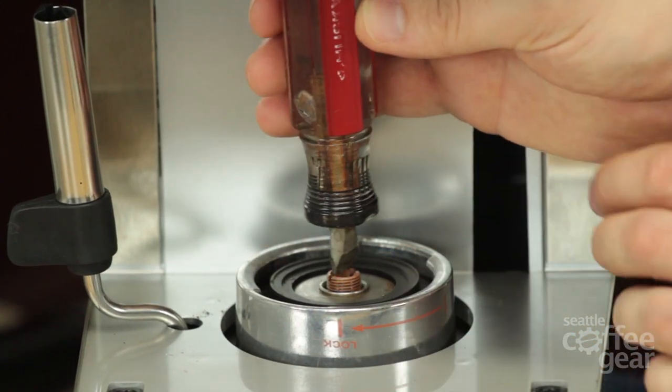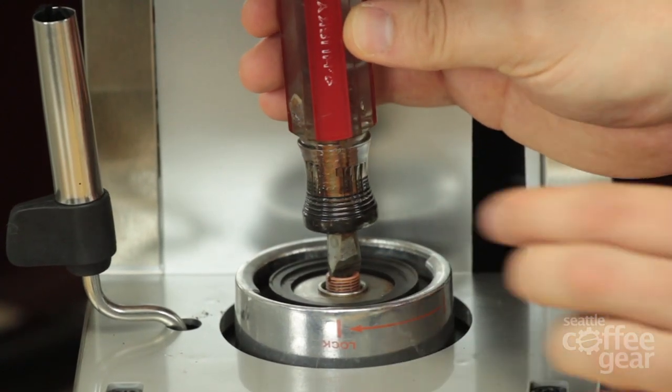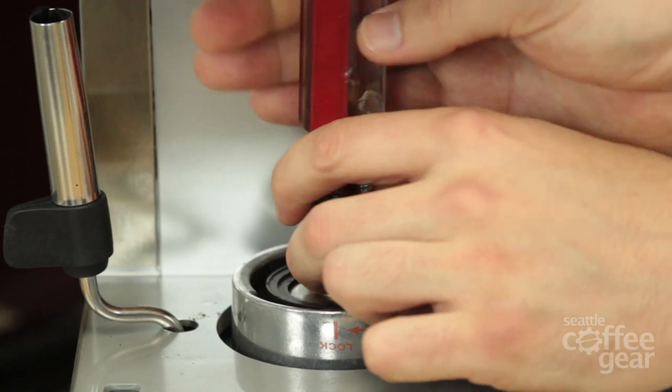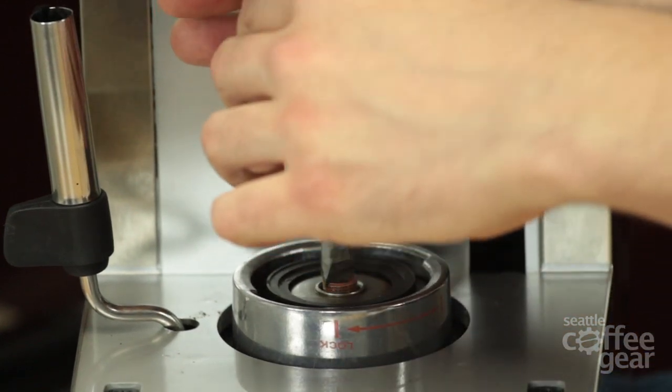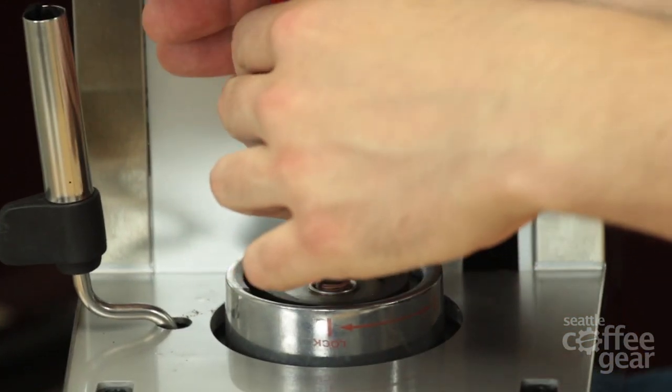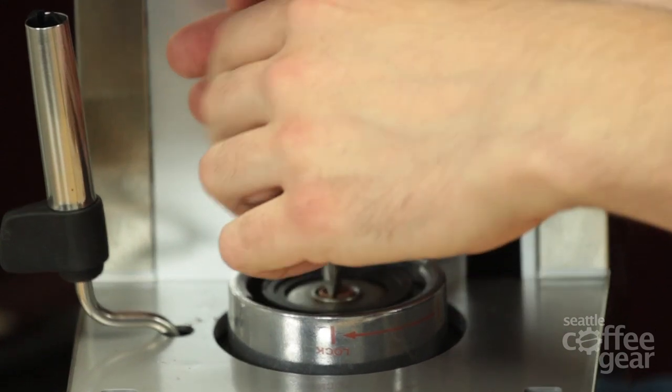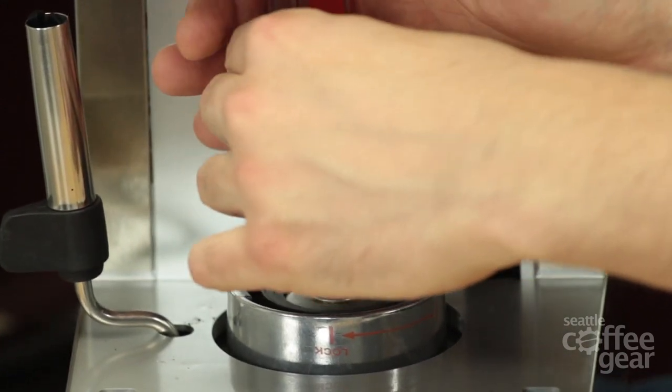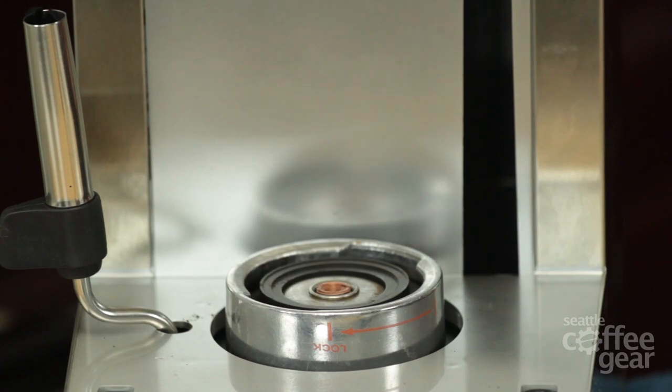Now I'm going back to my flathead screwdriver here, and we're just going to tighten this in. We're just going to finger tighten it. You do not need to go any tighter than that. As soon as this stops rotating, you should stop. Okay, we're good. So there's that.